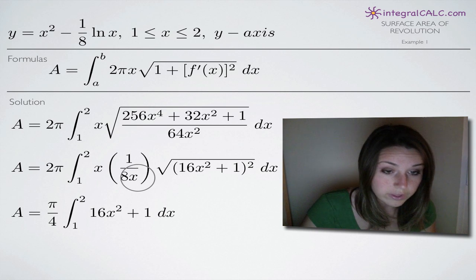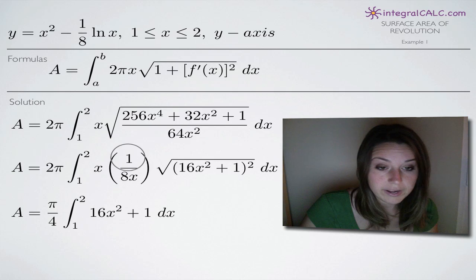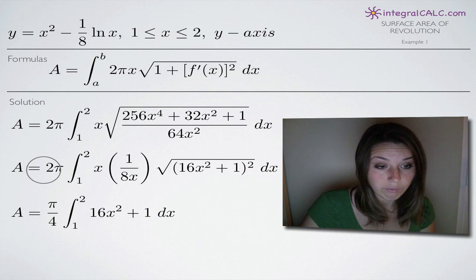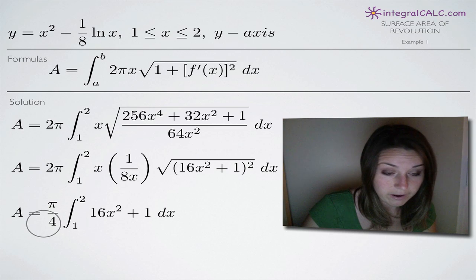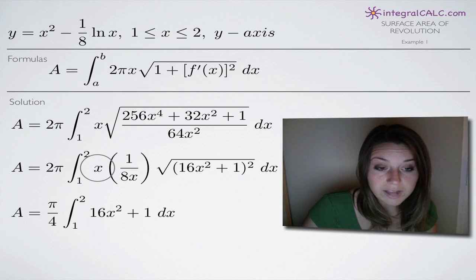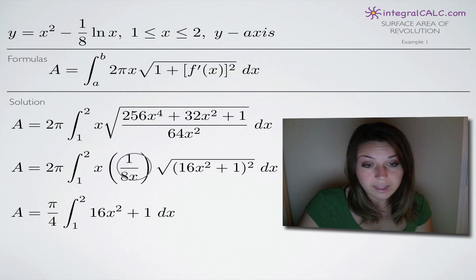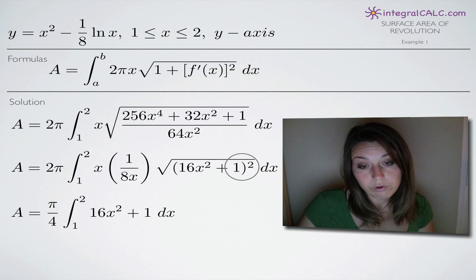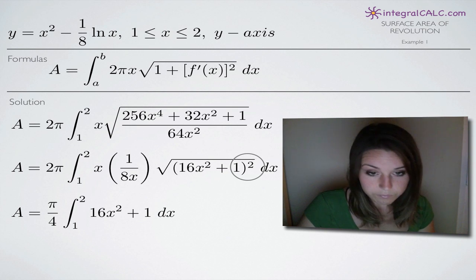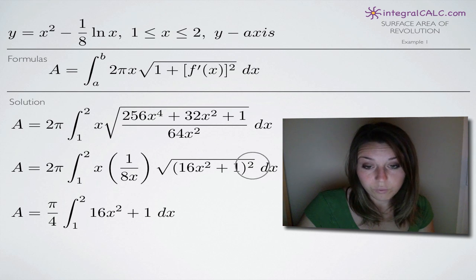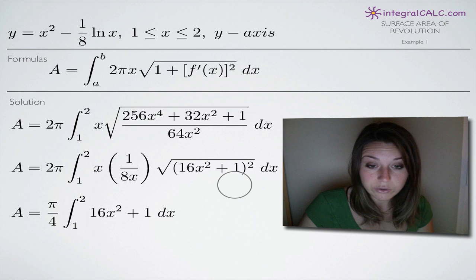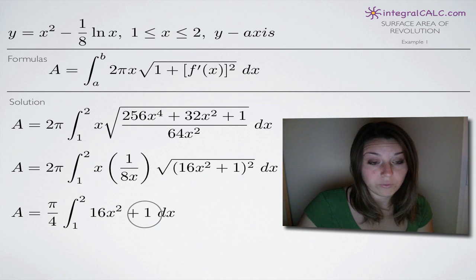Our next simplification is two-fold. First, we have a one-eighth coefficient on the integral; pulling it out front and multiplying by 2 pi gives us pi over 4. Second, we have an x in the numerator and an x in the denominator, so those cancel completely. We're left with just the square root of the quantity 16x squared plus 1, all squared — and when we take that square root, we're simply left with 16x squared plus 1.